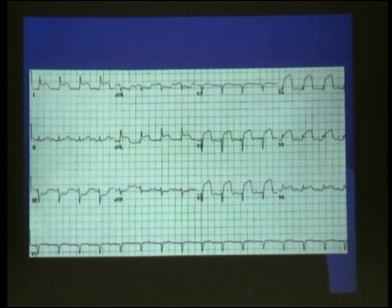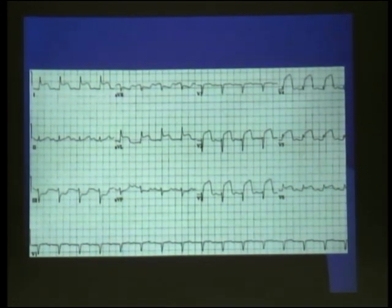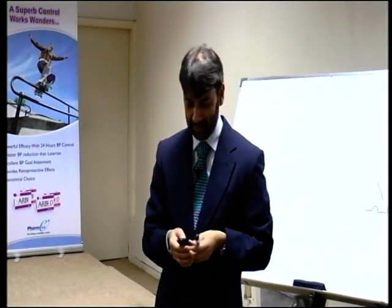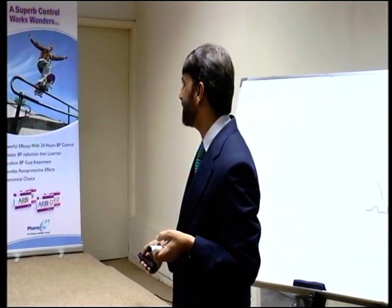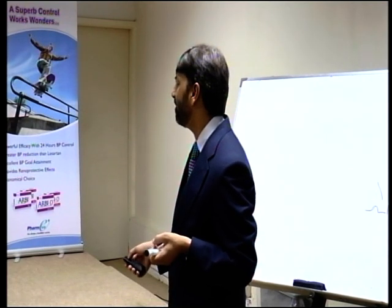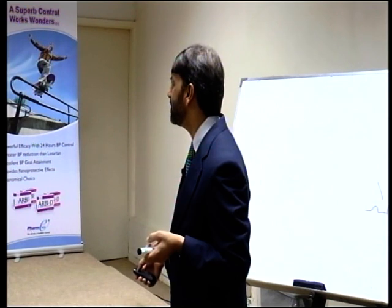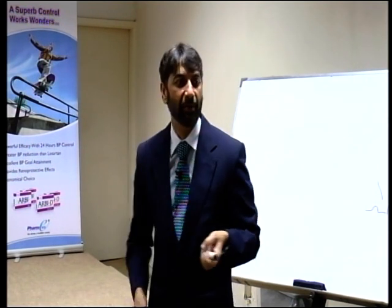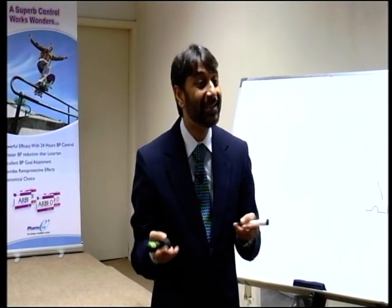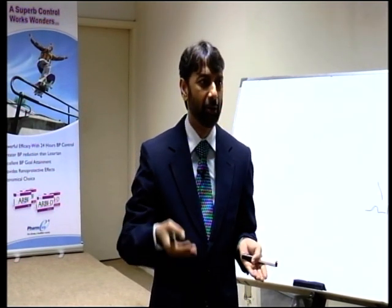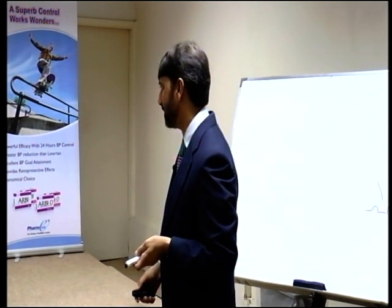Extensive anterior MI. When you are reading an ECG, just read what is there. So tell me: what is there in terms of ST elevation and depression? ST elevation of at least 5 to 6 millimeters in chest leads, and 1 to 2 millimeters — even up to 3 millimeters — in V1 and AVL. ST depressions in lead 3 and AVF around 2 to 3 millimeters. That is the way to narrate ECG findings.